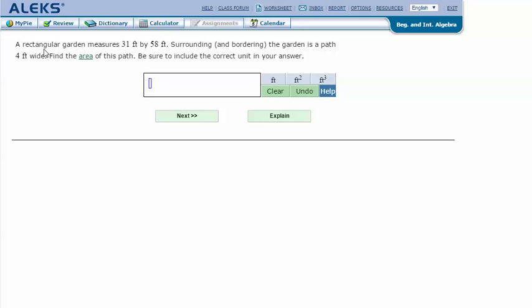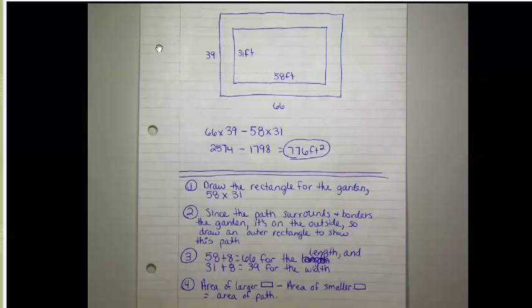A rectangular garden measures 31 feet by 58 feet. Surrounding and bordering the garden is a path 4 feet wide. Find the area of this path. Be sure to include the correct unit in your answer. Here are my notes. Here's my rectangular garden that's 58 by 31 feet, and then there's a path that surrounds and borders the garden that is 4 feet wide.